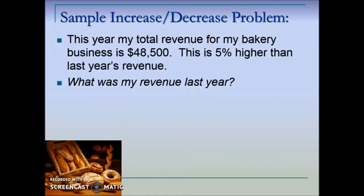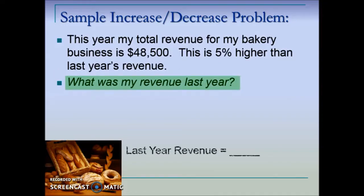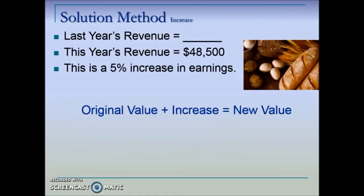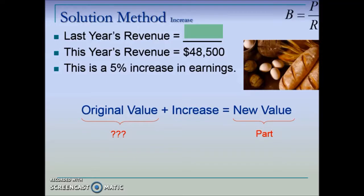Here's another example with incomplete information: this year my total revenue for my bakery business is $48,500. This is 5 percent higher than last year's revenue. What was my revenue last year? To lay out the information — we don't know last year's revenue. The problem tells us it was equivalent to a 5 percent increase compared to last year's revenue. We'll use the same foundation formula: the original value acts as the base and the new value acts as the part to help us determine last year's revenue, which is the base.